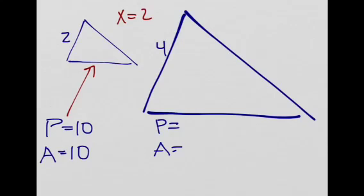So, the perimeter of this triangle right here will be 10 times 2, so basically 10 times x. And this is equal to 20.